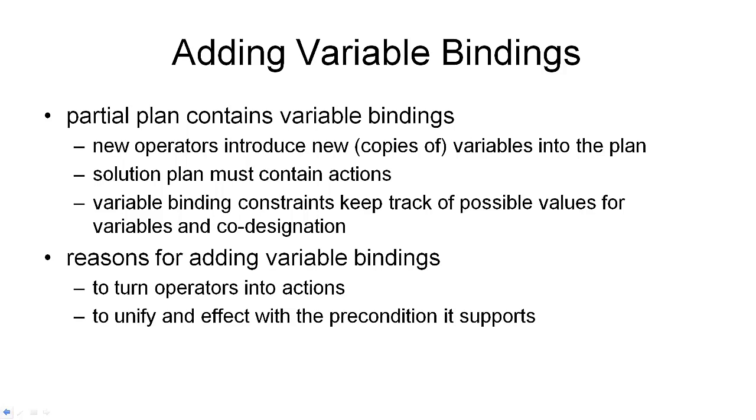The next component of a partial plan to consider are the variable bindings. We've already seen that every time we add a new instance of an operator to our plan, we introduce a new copy of the variables of that operator into our plan. But of course, our solution plan must contain actions, which are fully ground instances of operators. The variable bindings simply help us to keep track of the possible values for all these variables that we're introducing into our plan with the new actions.